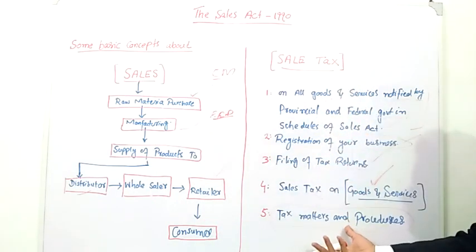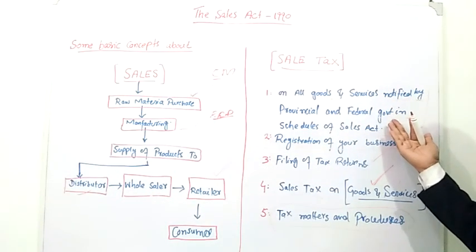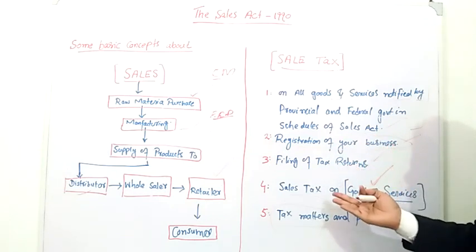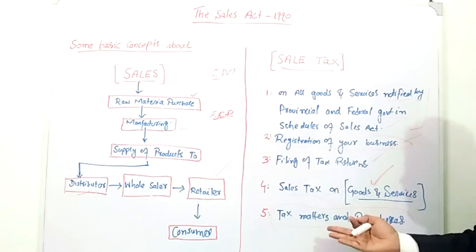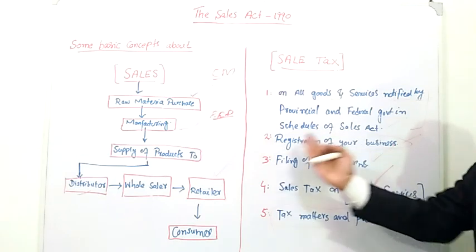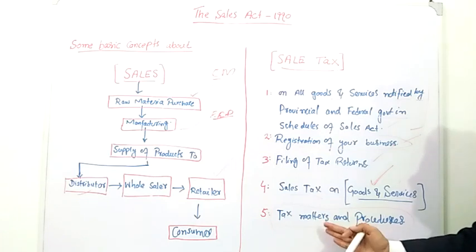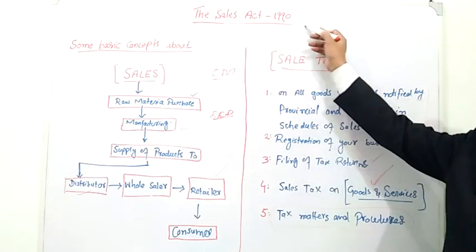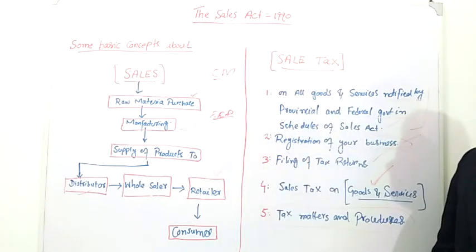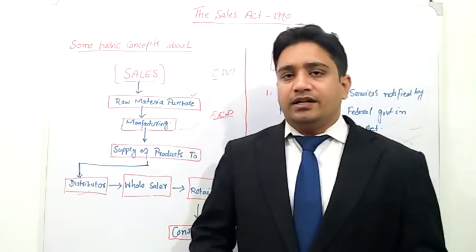We have discussed the five key points of sales tax. First, goods and services for government tax. After that, you can register and file tax returns for goods, products, and tax-related matters. This basically covers the two concepts discussed. We will start the next topics in the next lecture. Thank you very much. Allah Hafiz.